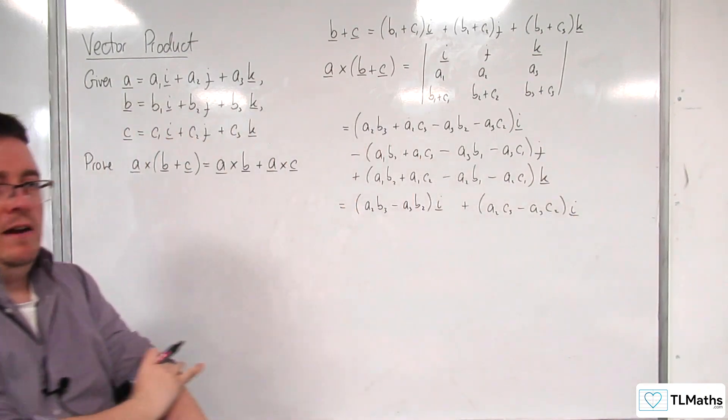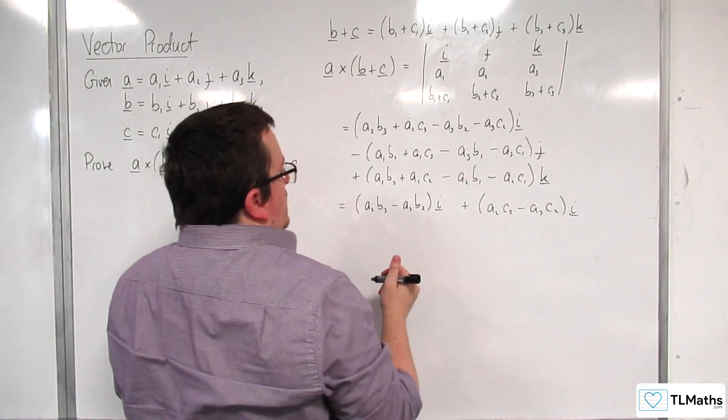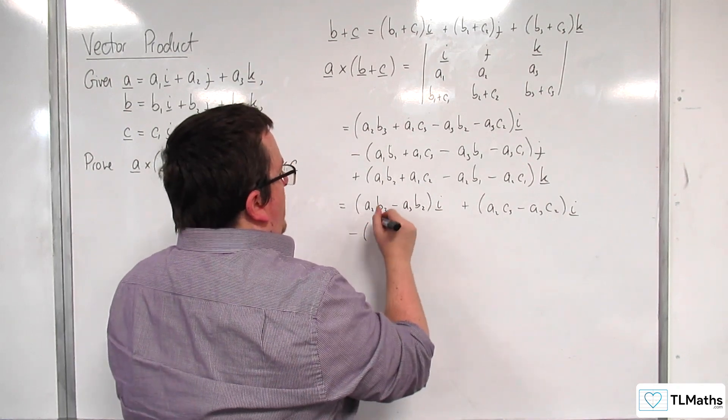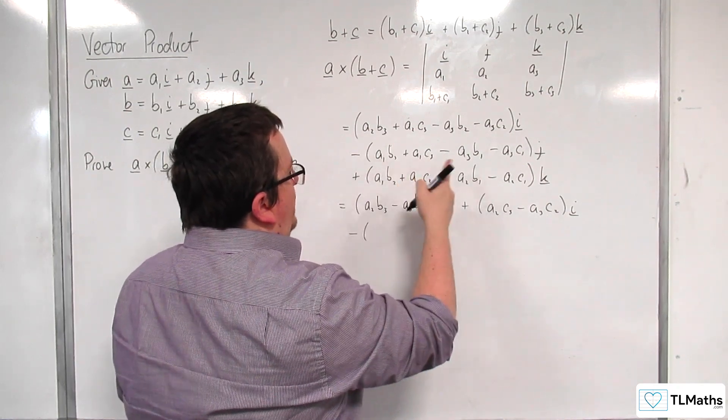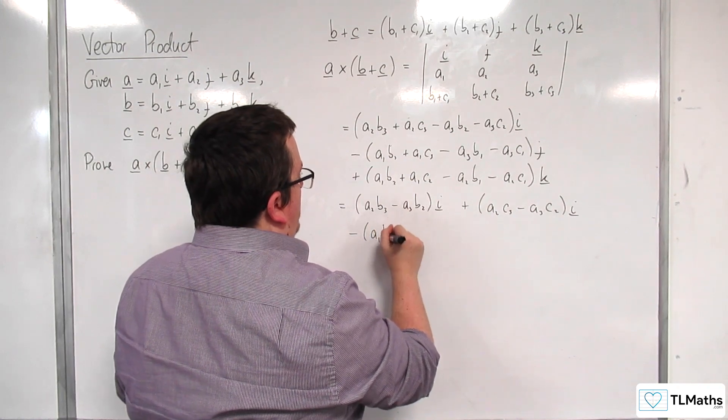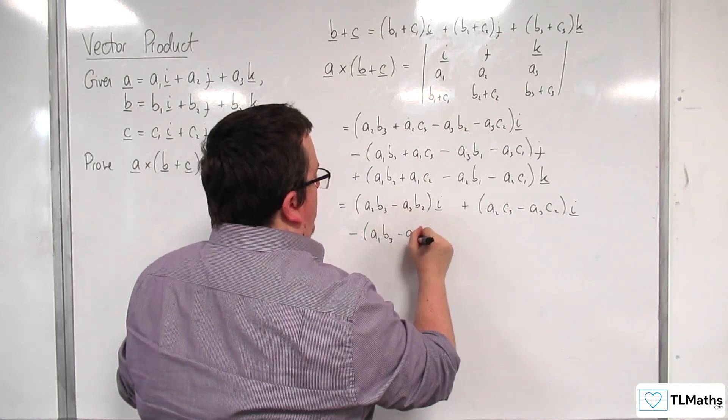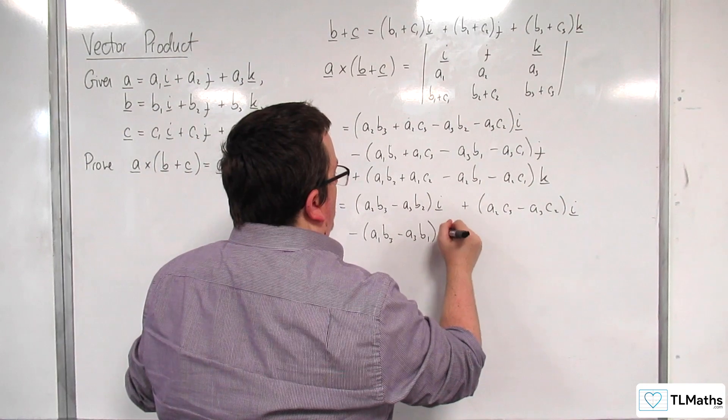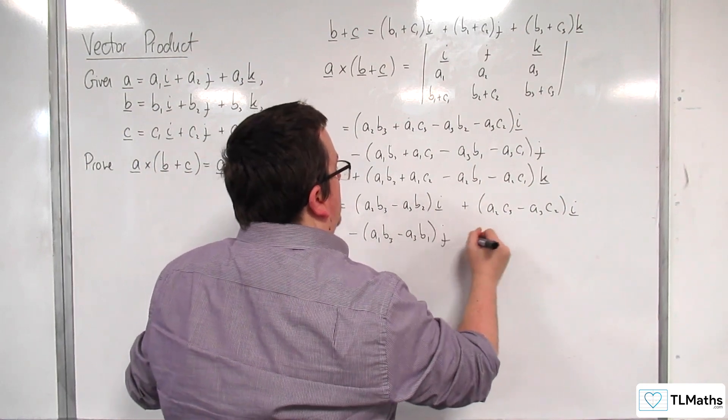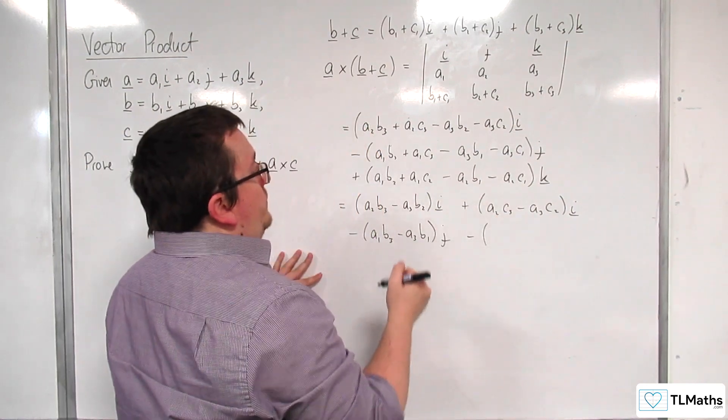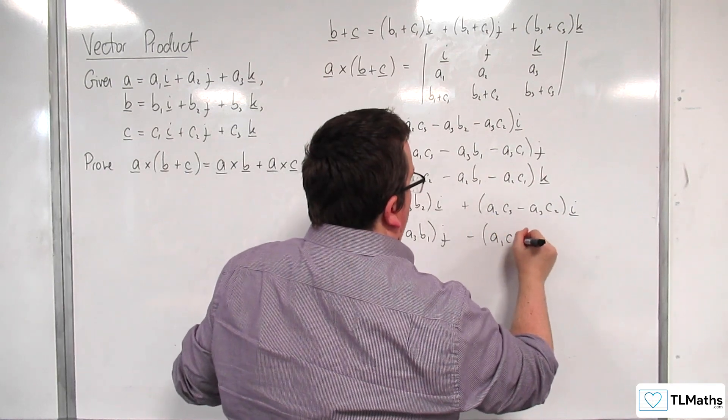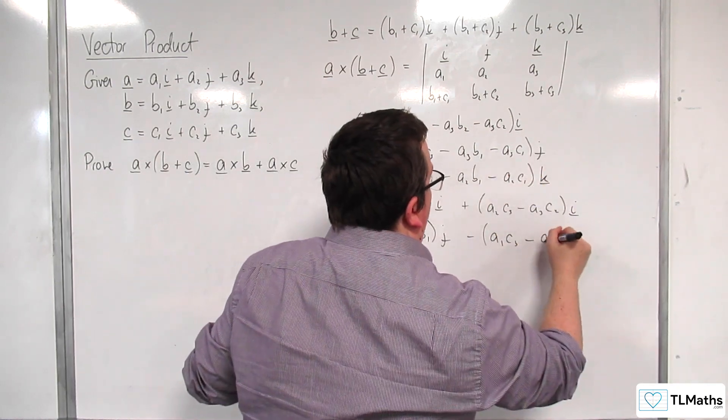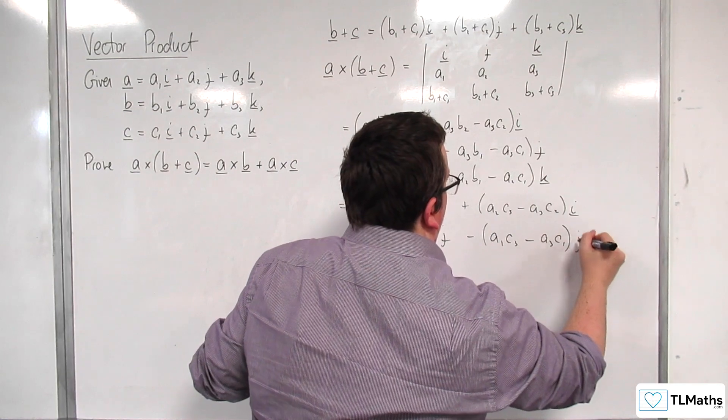So I'm separating them out. Now, then we are going to have, I'm going to keep the a's and the b's together. So a1b3 take away a3b1 j. Take away, and I've got the a1c3 take away a3c1 j.